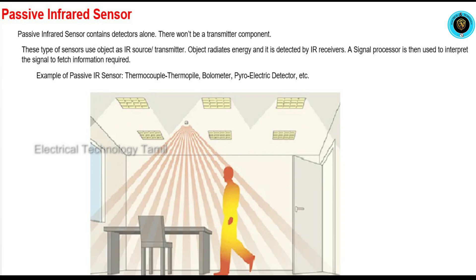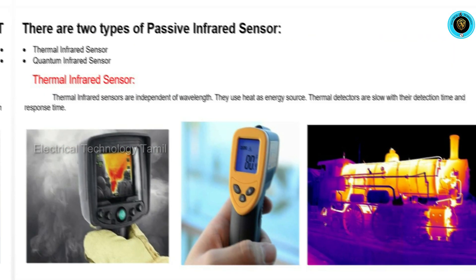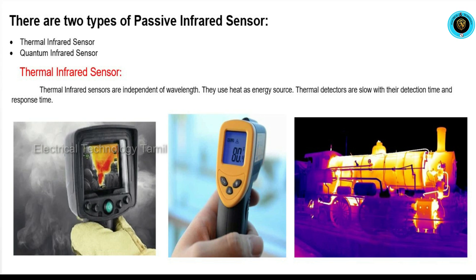The second type is the Passive Infrared Sensor, which has a transmitter and detector. We can use thermocouple, thermopile, bolometers, and pyroelectric detectors with passive IR sensors. There are two types of passive infrared sensors: Thermal Infrared Sensor and Quantum Infrared Sensor.